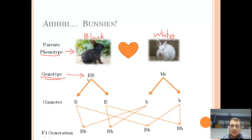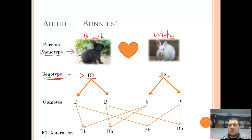In this example, I've given this bunny a genotype of big B, big B — and this bunny little b, little b. The lowercase letters represent recessive alleles, so the only time you end up with a white bunny is if you've got two little b's. If we have a black bunny, it could be big B big B, or maybe big B little b.